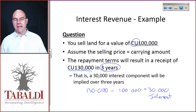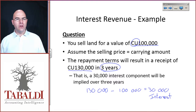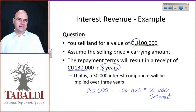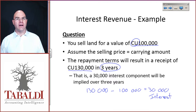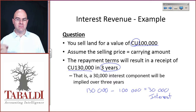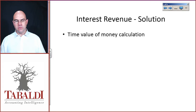The question is: how do I recognize that 30,000? For those who don't know any better, you would try to straight-line that — go 10,000, 10,000, 10,000. That is incorrect in terms of IAS 18. IAS 18 says you must use the effective interest rate method.